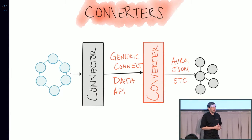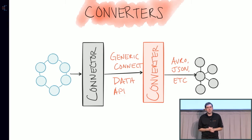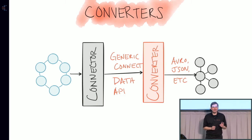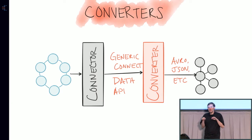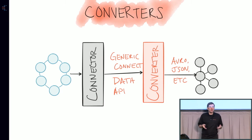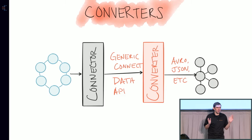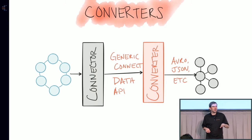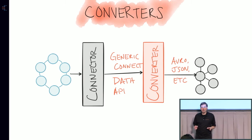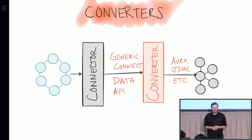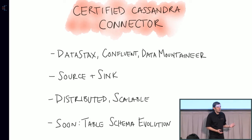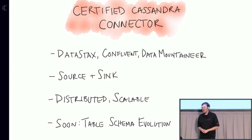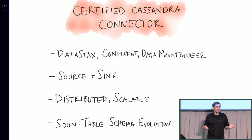Another important feature is converters — essentially serializers. We separate out and abstract the serialization format used with Kafka from any format used by the connector. Data coming from Cassandra, for example, arrives in a runtime format with no direct Kafka serialization. Instead of assuming one format, we abstract it so any connector writes to an abstract data API and serialization happens separately. This means connectors get serialization into any supported format for free. The Cassandra connector — just announced today as certified by Confluent, DataStax, and DataMountaineer — already supports a bunch of serialization formats because of this.